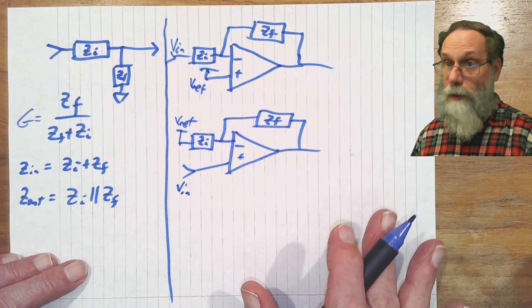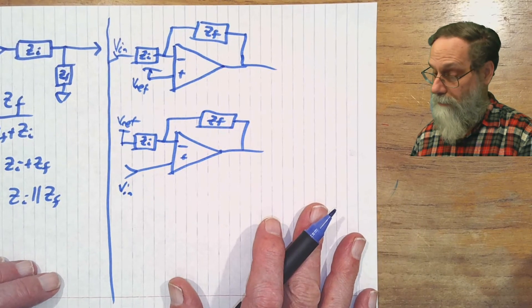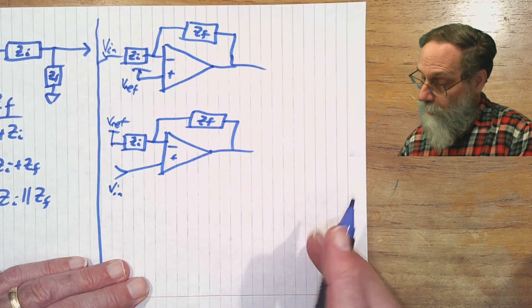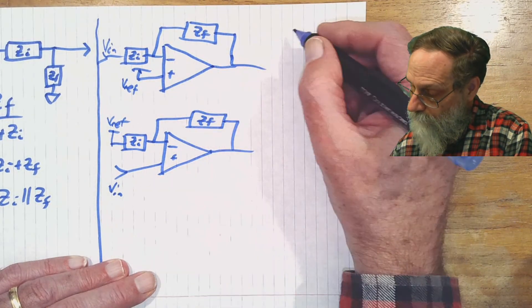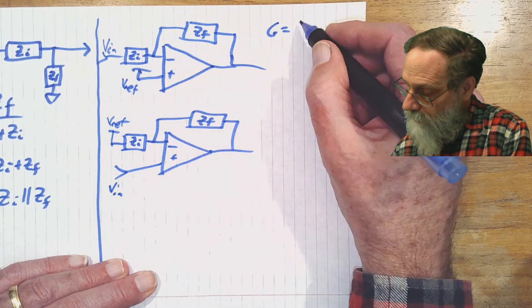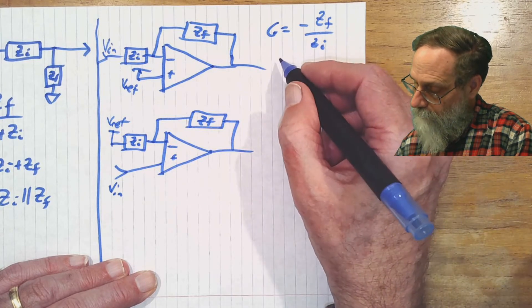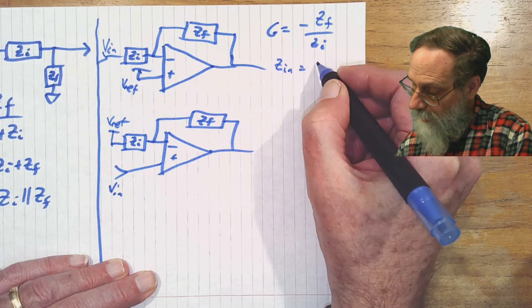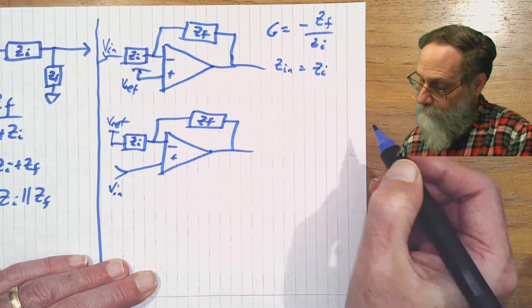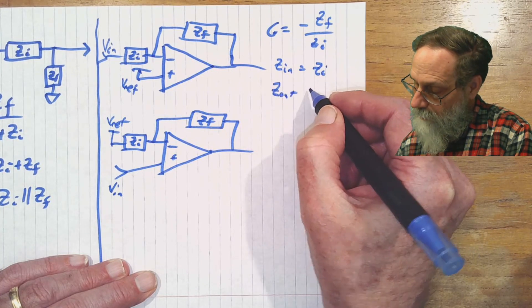What is the gain of each of these? Well, these are just standard negative feedback amplifiers. So this one has a gain of minus ZF over ZI. The input impedance is just ZI. And the output impedance is approximately zero.